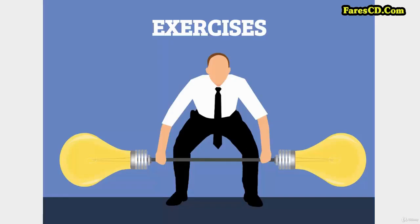The forms of BE ABLE TO: I am able to, you are able to, I was able to, you were able to, be able to. Examples: 'I was able to swim.' 'He was able to come.' 'They were able to do their homework.'